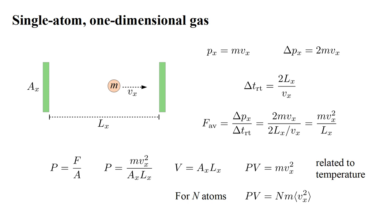In practice, of course, we are interested in systems with huge numbers of atoms, generally moving with different speeds. Each would make an M Vx squared contribution. For N atoms, the result is PV equals NM times the mean, or average, square velocity, which we denote by angled brackets.